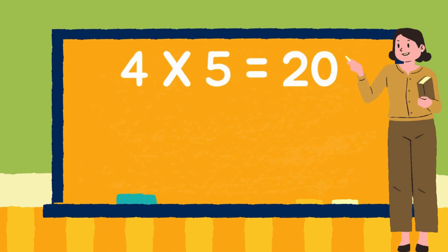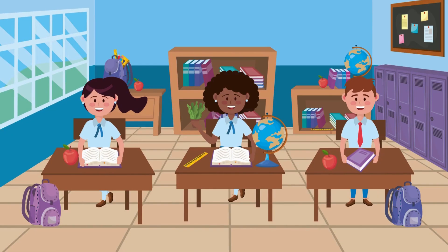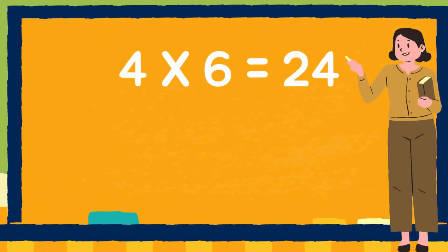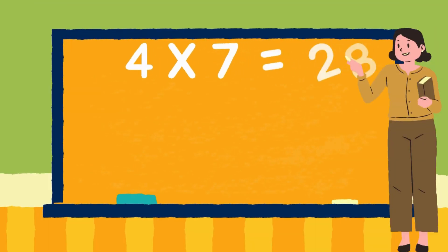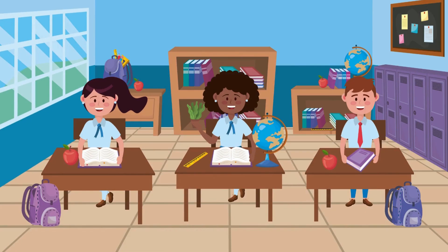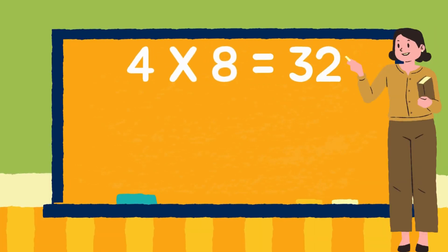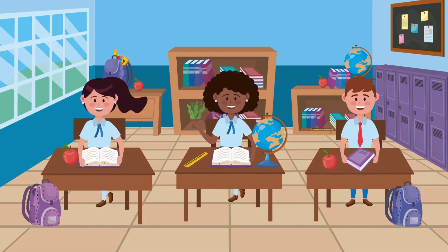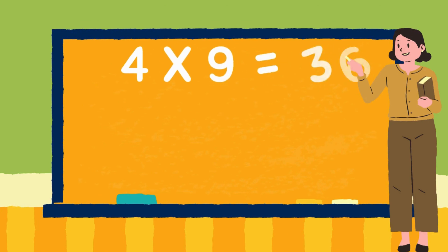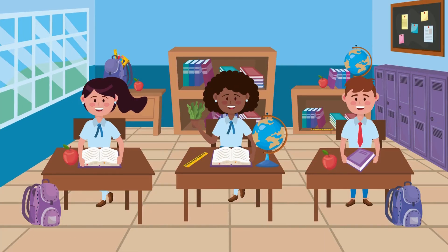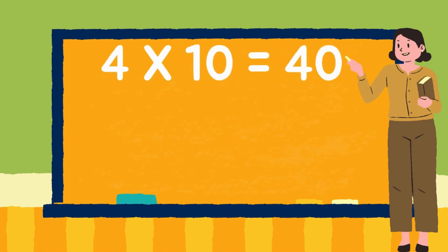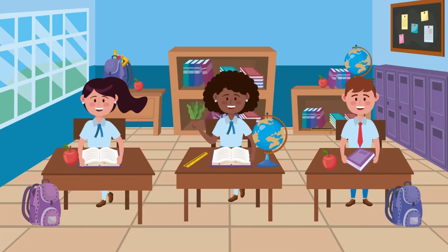4 fives are 20. 4 sixes are 24. 4 sevens are 28. 4 eights are 32. 4 nines are 36. 4 tens are 40.